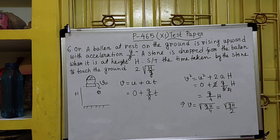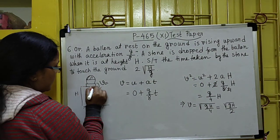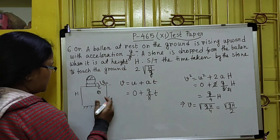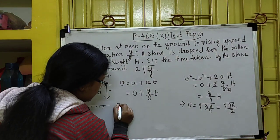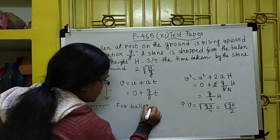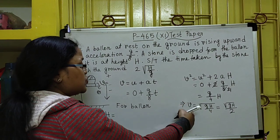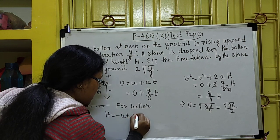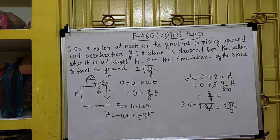Using S = UT + ½GT², taking the release point as the reference level: positive direction is upward, negative direction is downward. For the stone's displacement to the ground, H is negative. So the equation becomes: -H = -UT + ½GT², that is, -H = minus UT plus half GT squared.